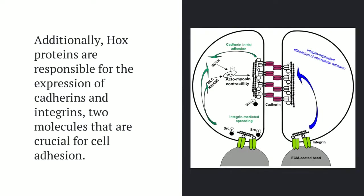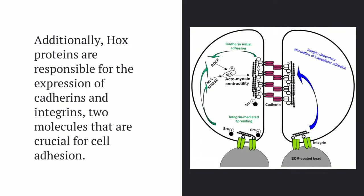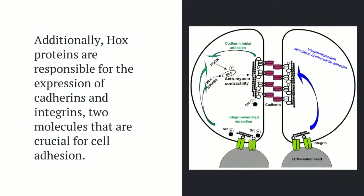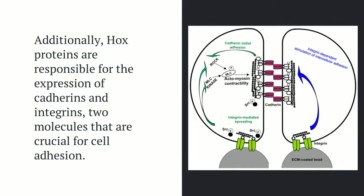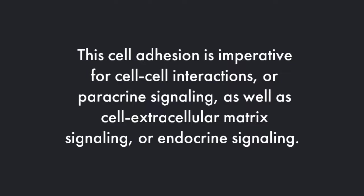Another way Hox genes are crucial for cell signaling is their responsibility in the expression of cadherins and integrins, which are two molecules found on the outsides of cells and are really important for cell adhesion. This cell-to-cell adhesion is imperative for interactions and signaling between cells — both paracrine signaling, when cells are touching because of the adhesion, but also the signaling that takes place in the extracellular matrix and endocrine signaling that occurs there.